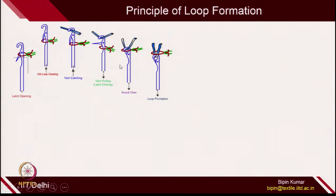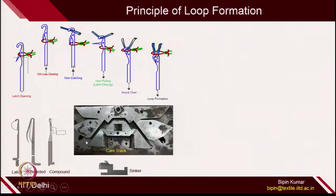The principle of loop formation is extremely important in understanding knitting. The needle plays a very important role — it is the heart of knitting. The sequence is: start with the old loop, clear the old loop, cast new yarn with the needle, pull the yarn through the old loop, and knock out the old loop from the needle. This sequence of clearing, catching yarn, pulling yarn, knocking out and forming the loop must be followed for every loop in a weft knitted structure. Needles and cams operate together to make this sequence happen on the machine.